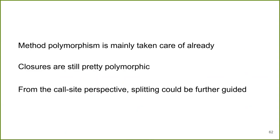So what can we take away from all this? Method polymorphism is already really well taken care of by the optimizations that are in place. Closures, despite those optimizations, are still pretty polymorphic and might benefit from further optimizations. Also, from the call site perspective, splitting could be further investigated — though you have to take these results with a grain of salt, because from the system's perspective it's much more complex.